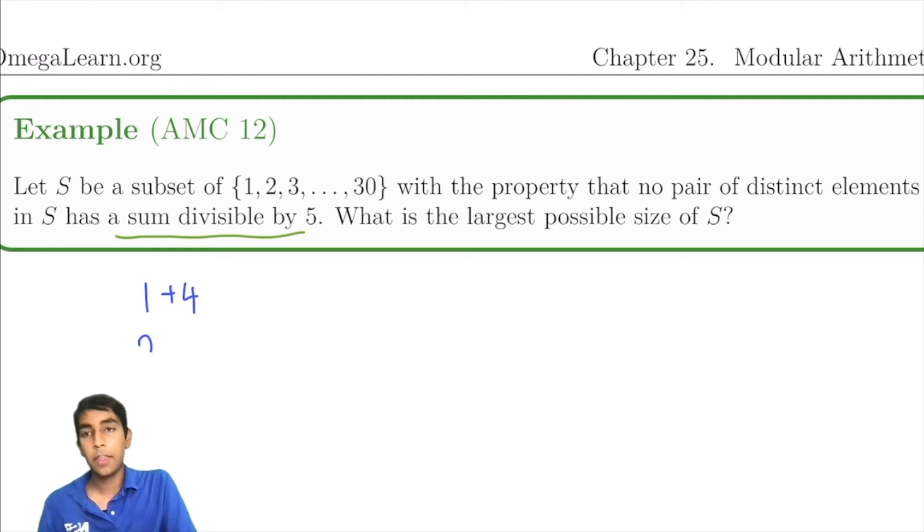Or we can have a number that leaves a remainder of 2 when divided by 5, plus another number leaving a remainder of 3 when divided by 5, or we can have two numbers that both leave a remainder of 0 when divided by 5. Those are the only possibilities for remainders that will add up.